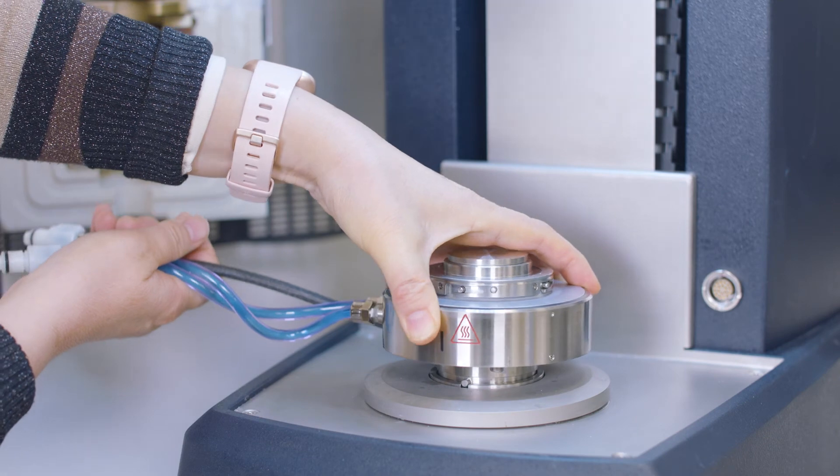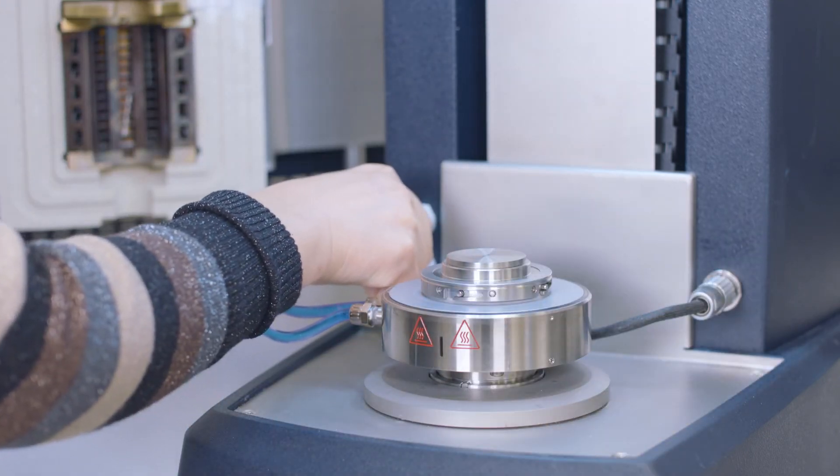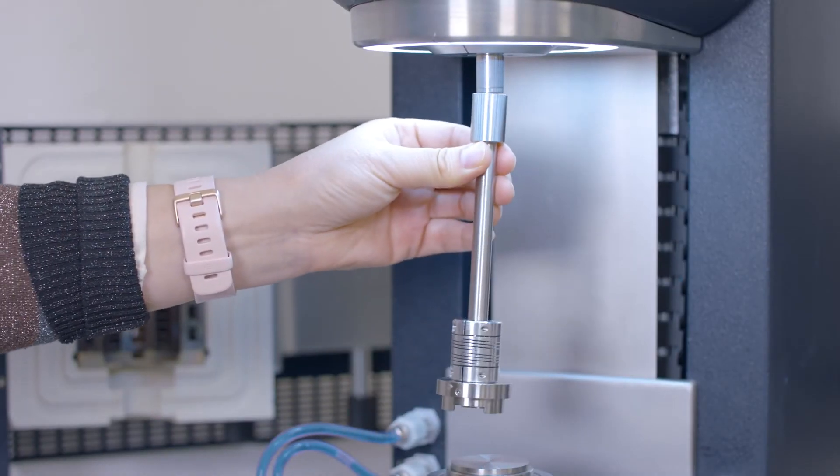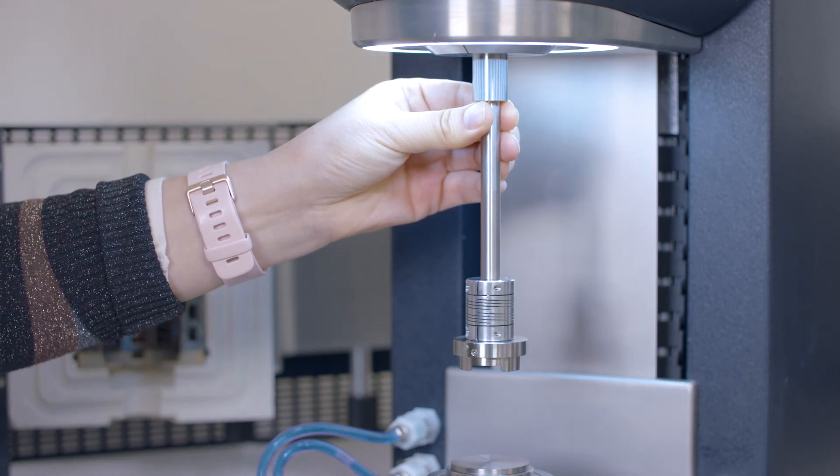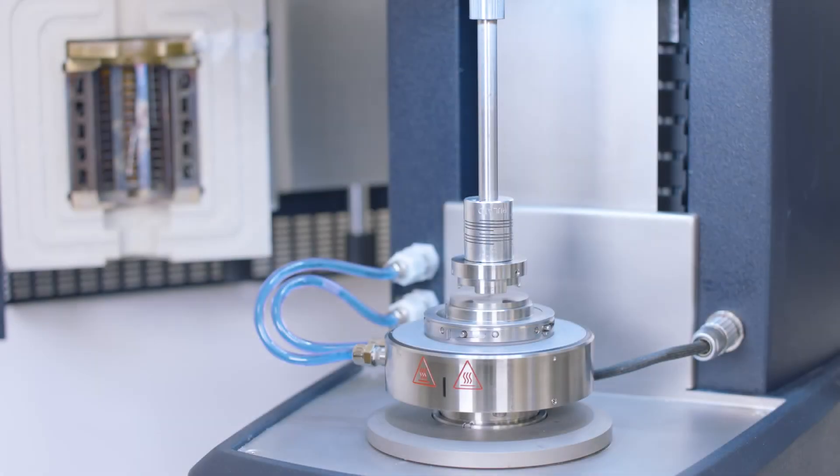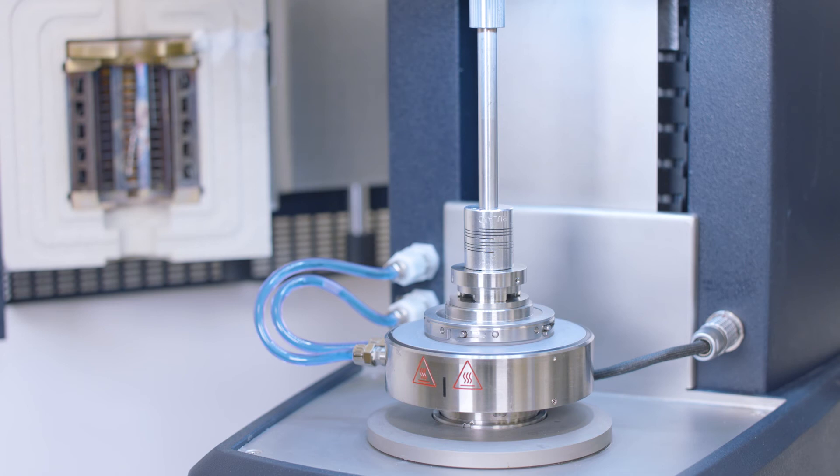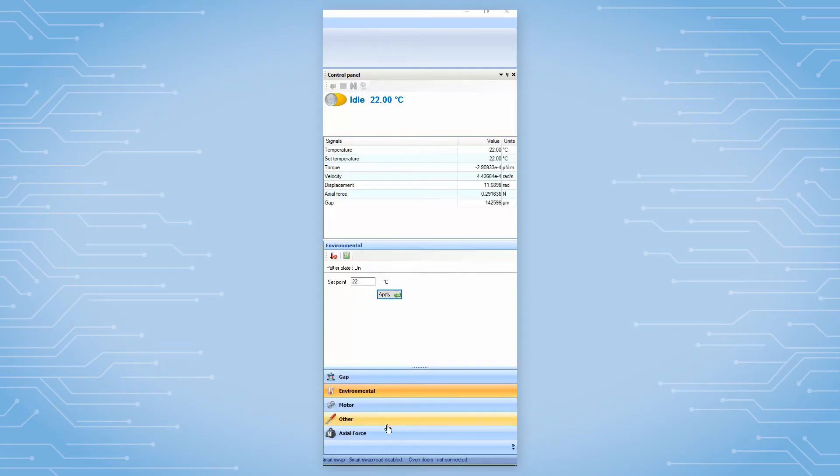Setting up a tribological rheometry test on a Discovery Hybrid rheometer is very straightforward. First of all, after attaching the upper and lower geometry to the rheometer, users need to zero the gap. If needed, from the TRIO software control panel, also zero the axial force.